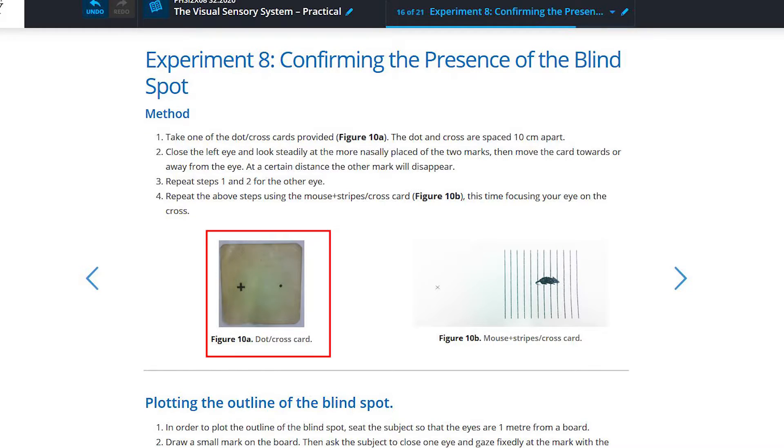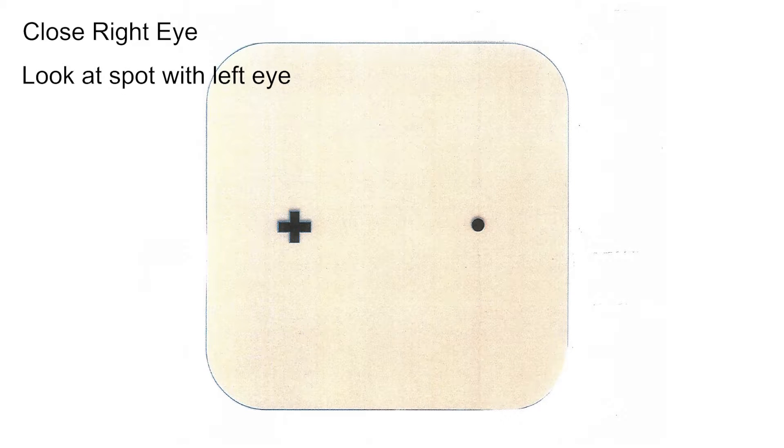Next, on the first card you can either use the spot or the cross as the pattern which is going to fall on your blind spot. The marking that you want to fall on the blind spot has to be lateral to the marking that you're looking at. So in this example, if we wanted the cross to land on our blind spot, we would use our left eye and look at the spot.